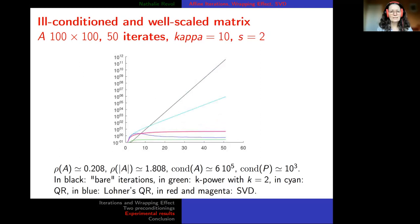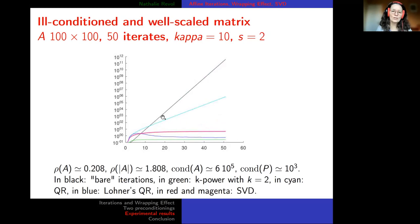With a smaller number of iterates we can see the difference more clearly: the green method gives tight intervals; Loaner's method and SVD-based method are slightly larger; and the brute force method becomes worse once you have around 10 to 12 iterations.